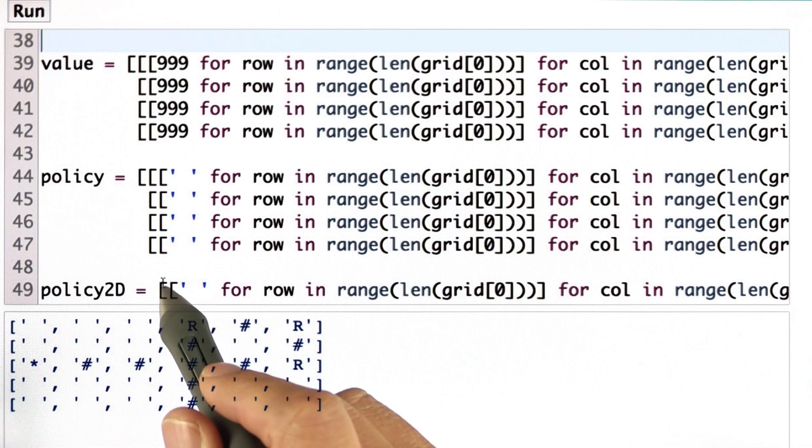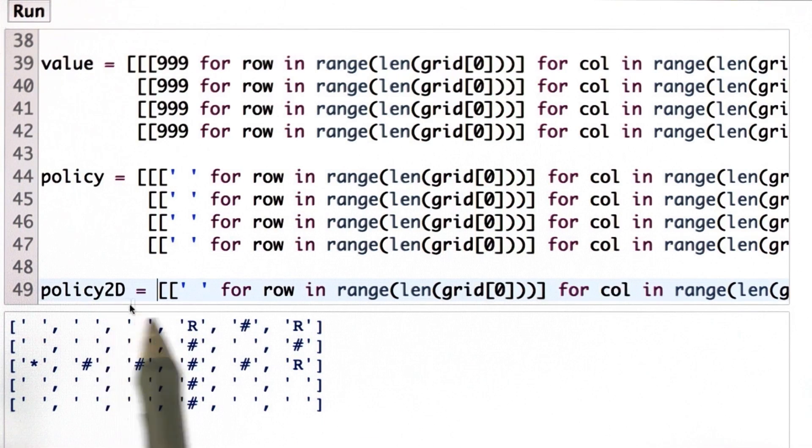And then I have a function called policy2D, which is the one I later going to print. And that's the same in 2D.